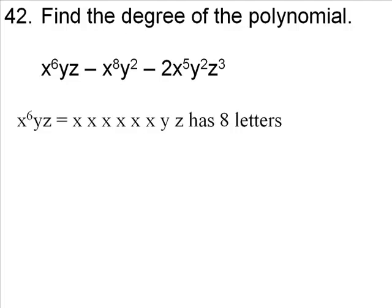My first monomial is x to the 6th, yz, which is 6 x's, and a y and a z, has a total of 8 letters. 6 x's, a y, and a z. Alright?